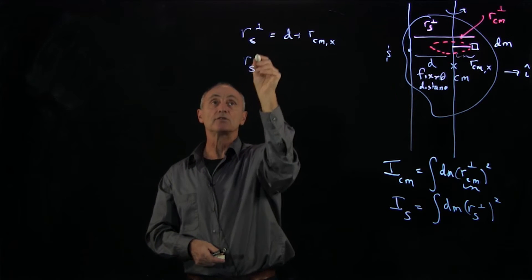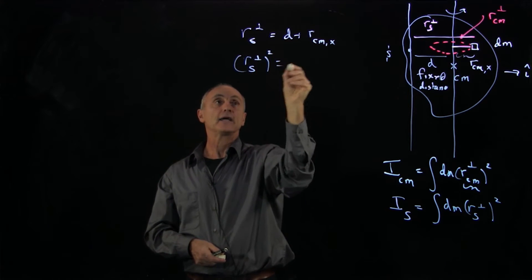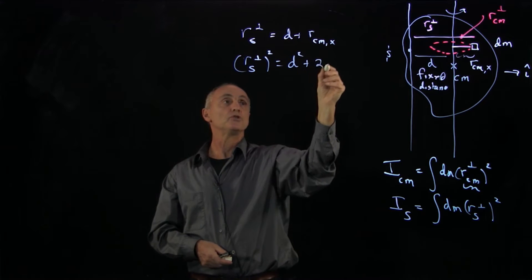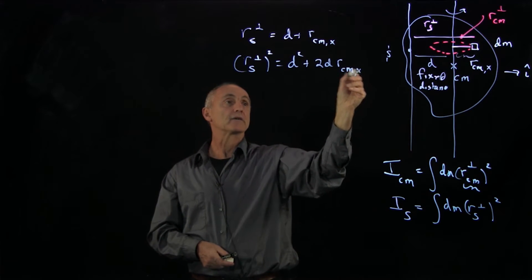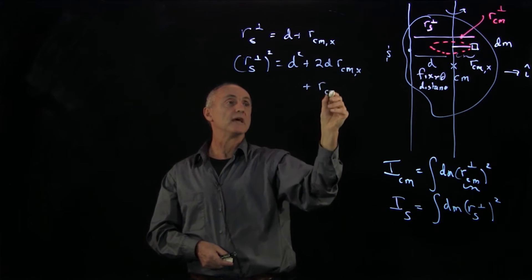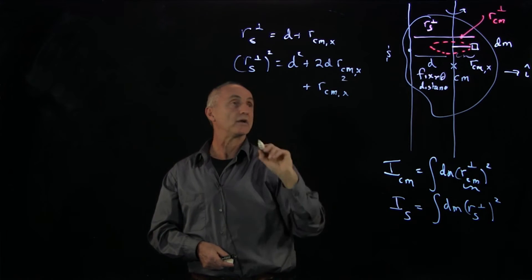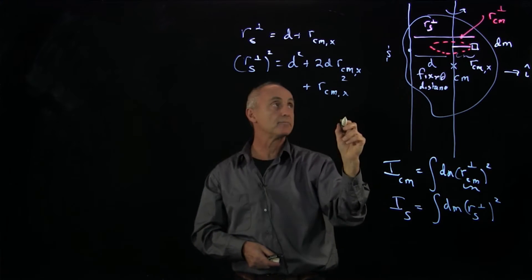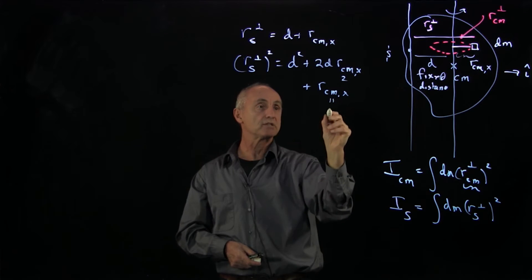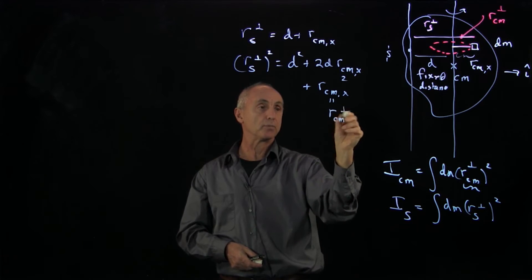And if I square this, I get d squared plus 2d r_cm_x plus r_cm_x squared. And that r_cm_x squared is precisely what we're calling the perpendicular distance.